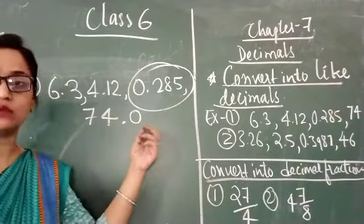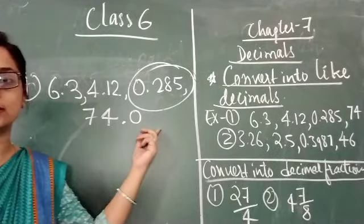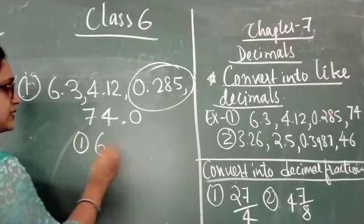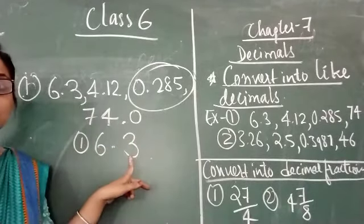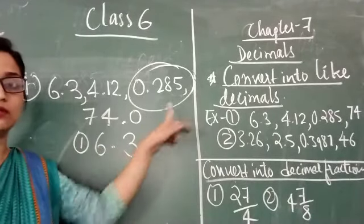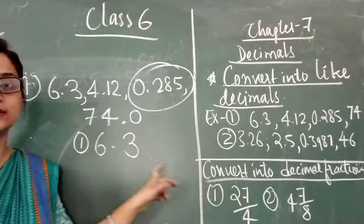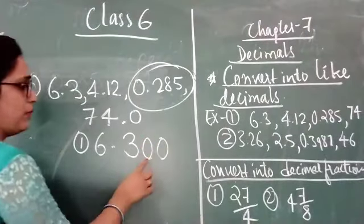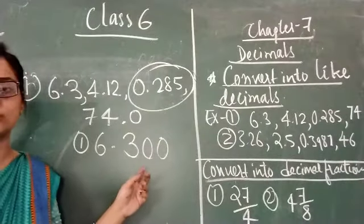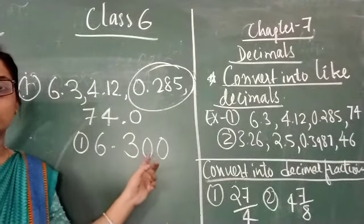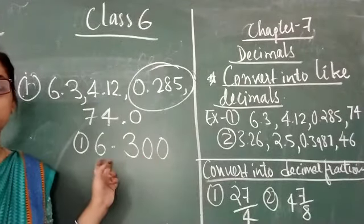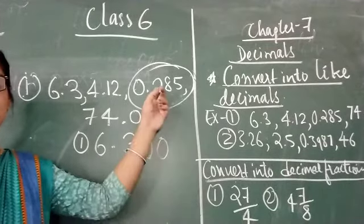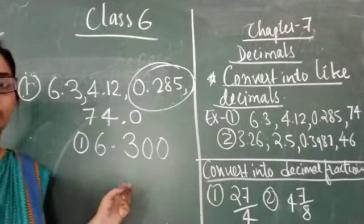So we have to convert into like decimals. First, take 6.3 — it has 1 decimal place value and the maximum is 3, so let us make it 3 by putting 2 zeros. It becomes 6.300, which is now like 0.285.